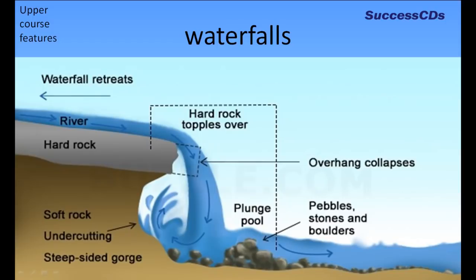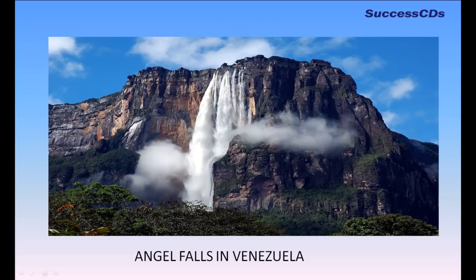A waterfall is formed when a river descends suddenly from a higher level to a lower level. It is generally formed at the edge of hard rocks lying on relatively soft rocks. The soft rock area becomes deeper as the soft rock gets eroded more than the hard rock, creating a sudden drop in the river's bed. Here, the water rushes down almost vertically in the form of a waterfall. Angel Falls in Venezuela are the world's highest waterfalls.